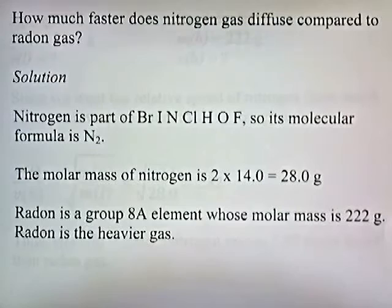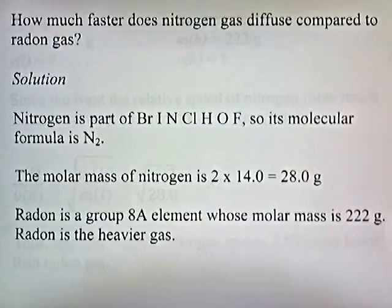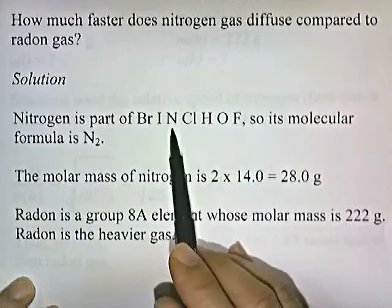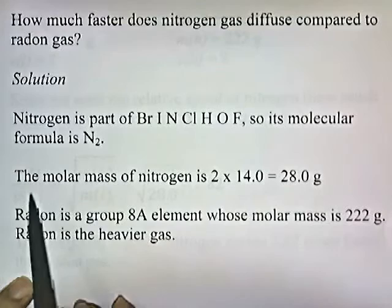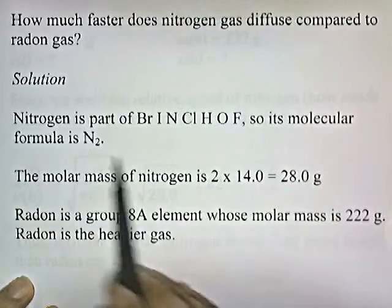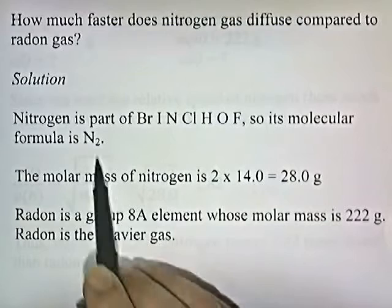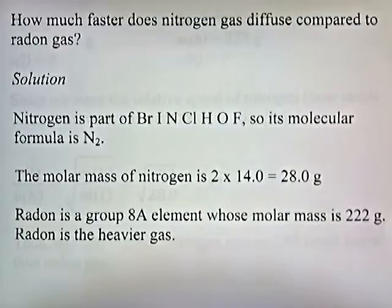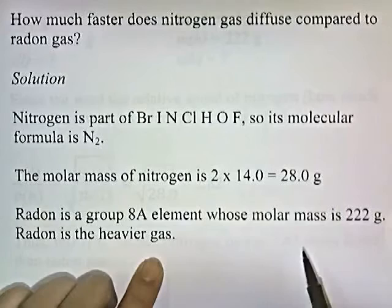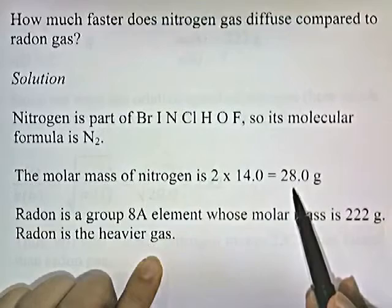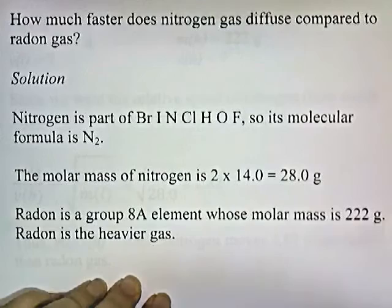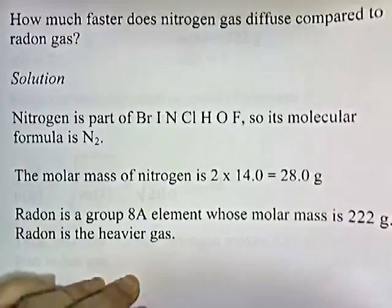Let's solve a problem. How much faster does nitrogen gas diffuse compared to radon gas? So, here's our solution. Well, nitrogen is part of Brinkelhoff, so its molecular formula is N2. So, knowing the molecular formula, we can calculate the molar mass of nitrogen, 2 times the mass of 1 mole of nitrogen, which is 14. 2 times 14 is 28 grams. So, that's how much 1 mole of N2 gas weighs. And then radon is a group 8 element, and if you look on the periodic chart, you'll find that 1 mole of radon weighs 222 grams. And so, radon is the heavier gas. Radon is 222 grams, whereas nitrogen gas is only 28 grams per mole. So, now that we know the light one, nitrogen, and the heavier one, we can sort of fill in the variables.